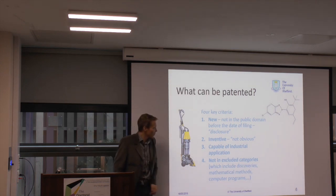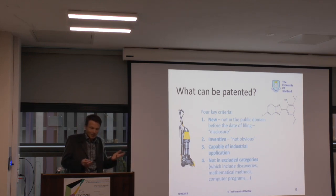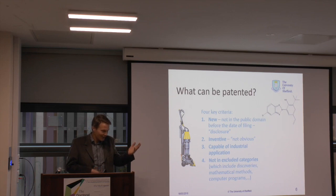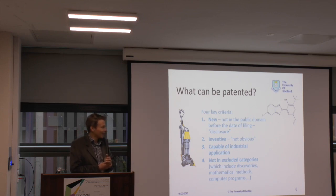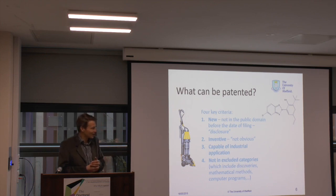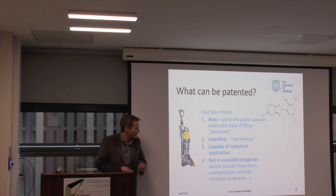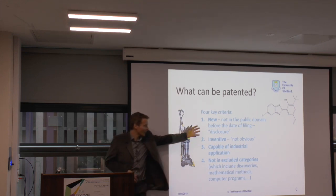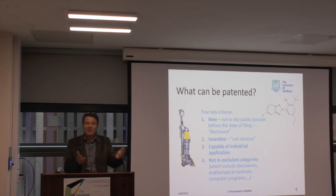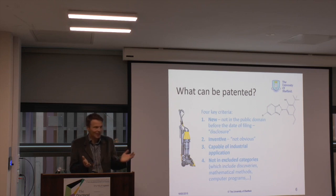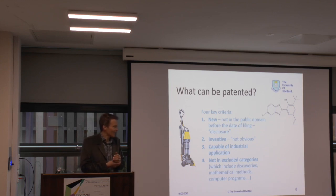The first criterion is novelty — it's not in the public domain. Your idea must not already be disclosed through any publication, whether that be journals, trade papers, open literature, websites, or blogs. If the information you wish to protect can already be found in the public domain, it's already counted as being disclosed and you can't patent it. You must also be able to demonstrate that your idea is inventive — there is an inventive step that is not obvious to someone already skilled in your particular field of research. There must be a non-obvious step to what you've done.